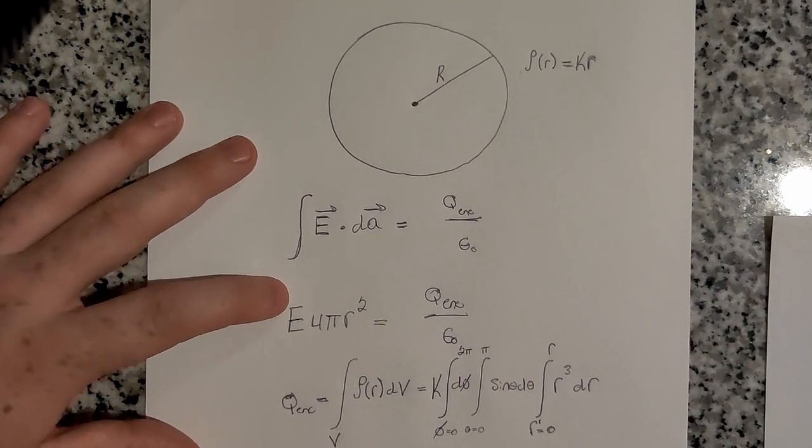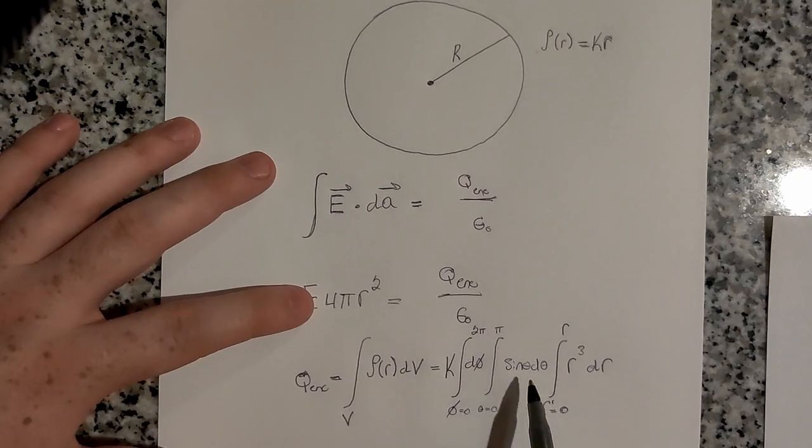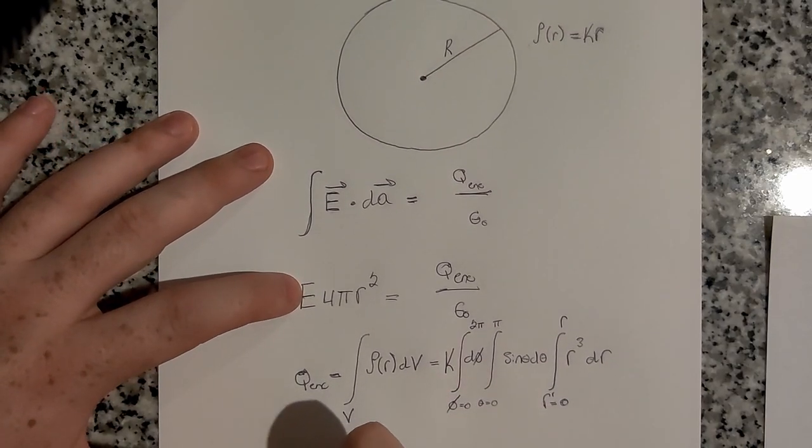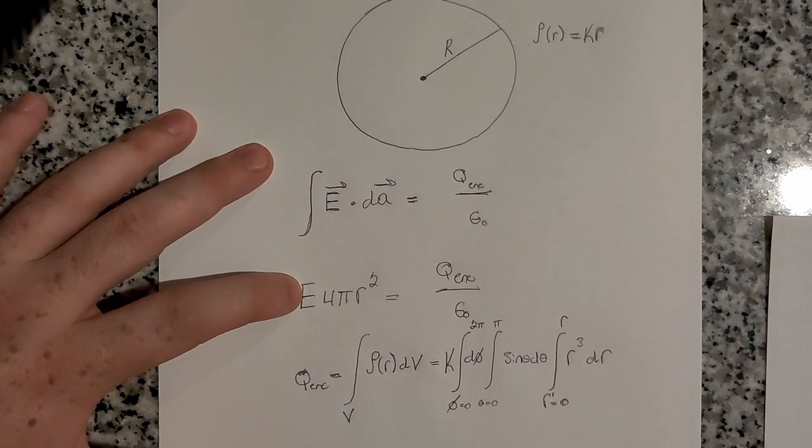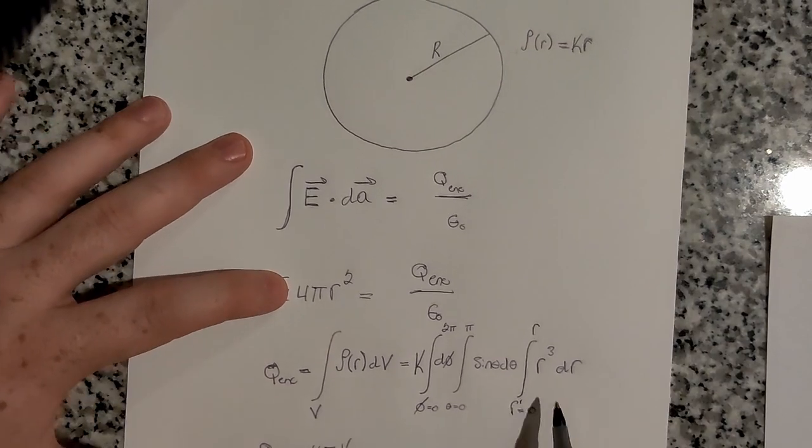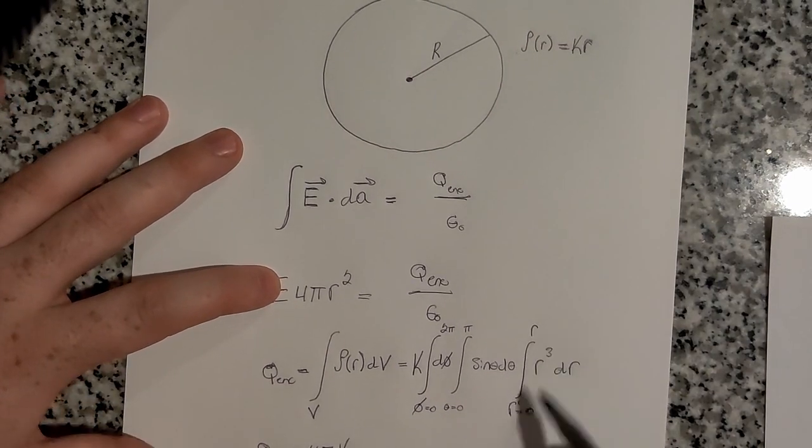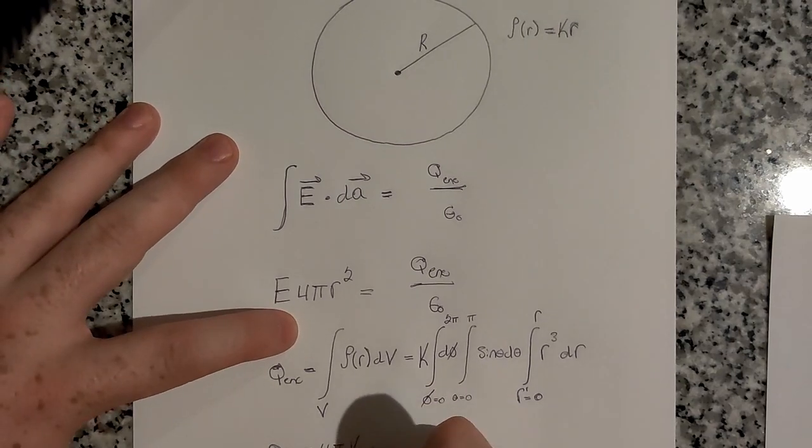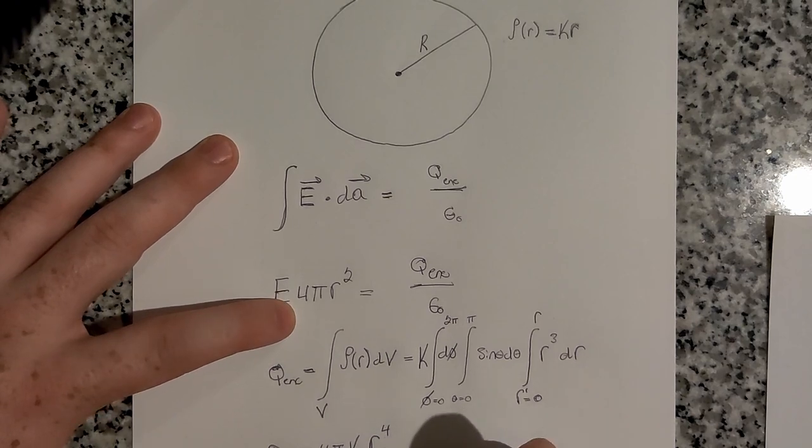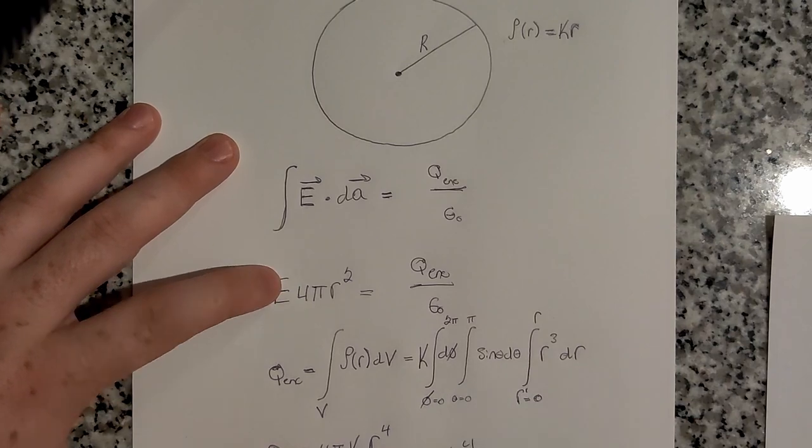So these first two integrals are pretty simple. That evaluates to 4π. And then we have k. So q enclosed is equal to 4πk. And then this integral evaluates to r to the 4 over 4. So we have r⁴ divided by 4. So this just evaluates to πkr⁴.